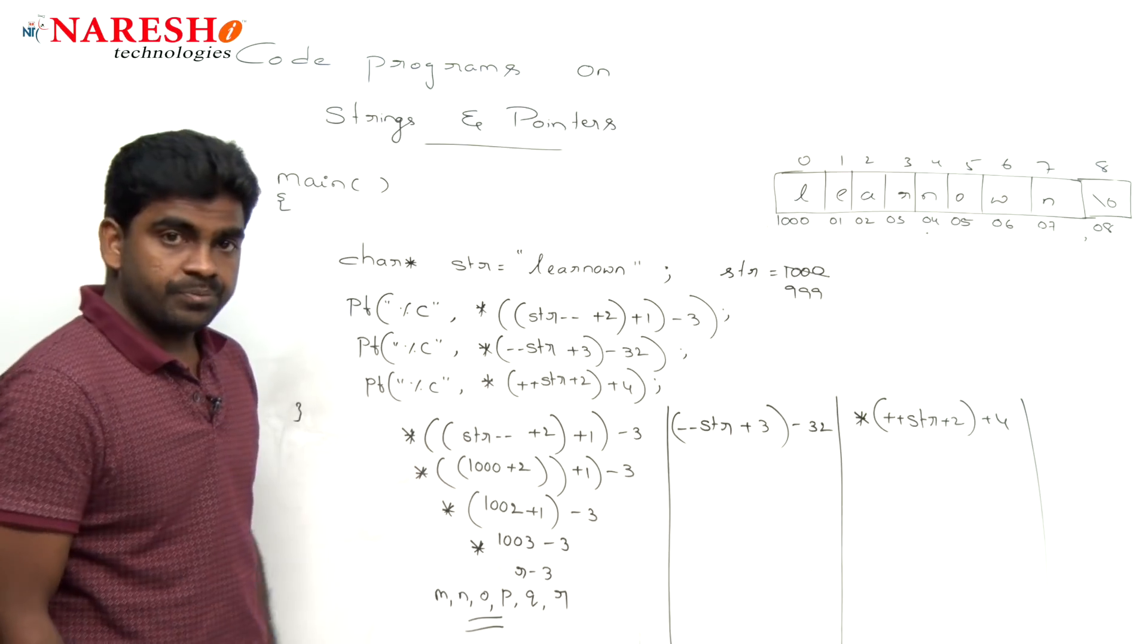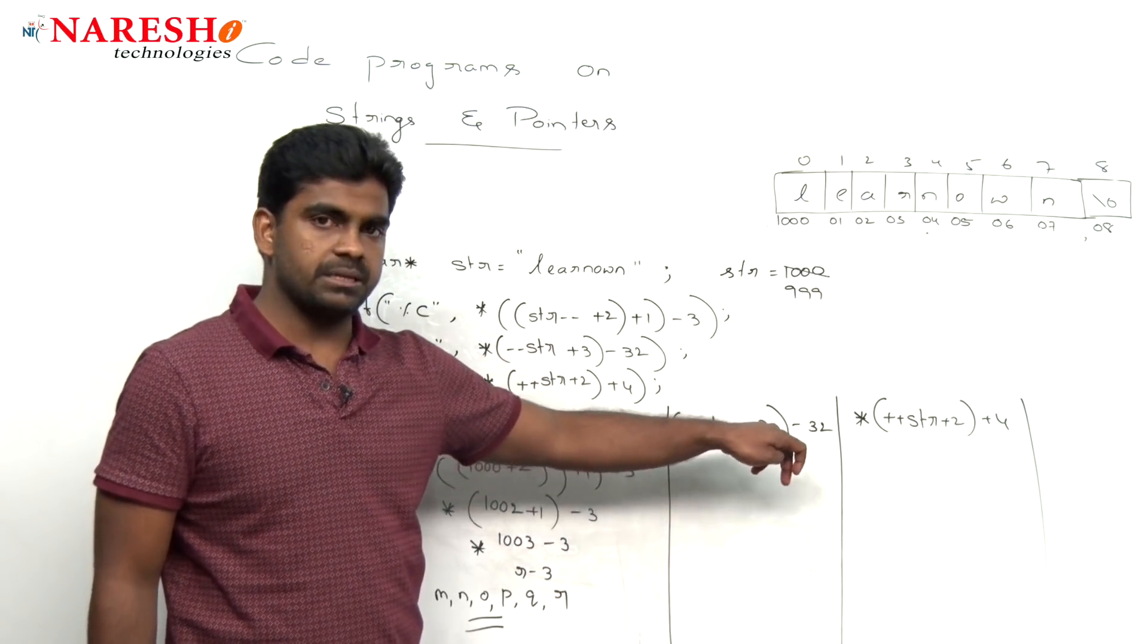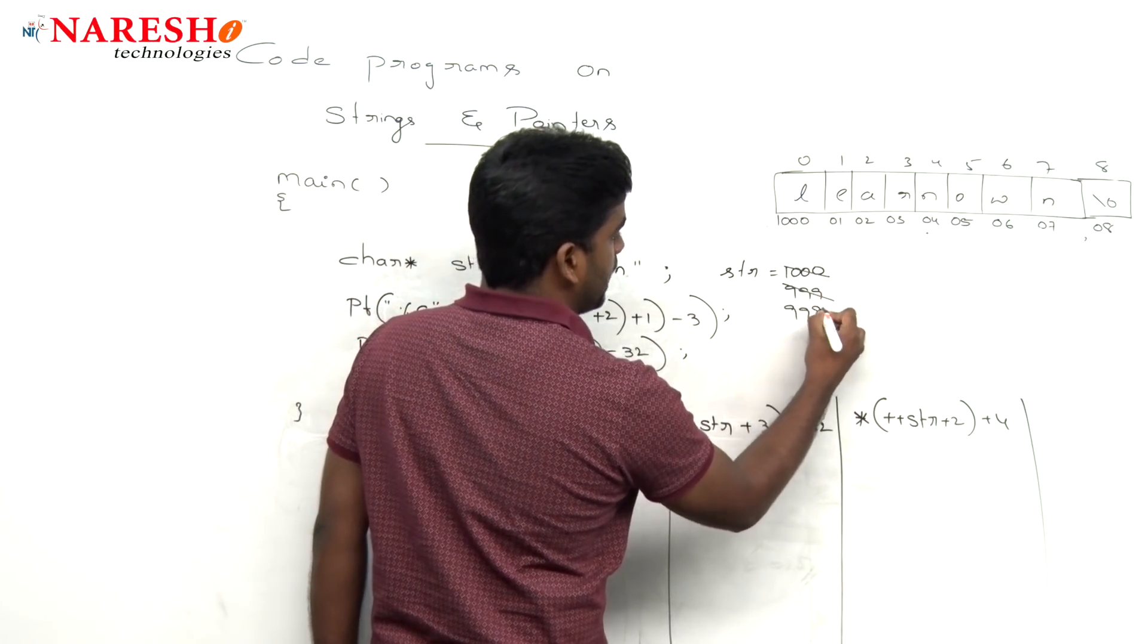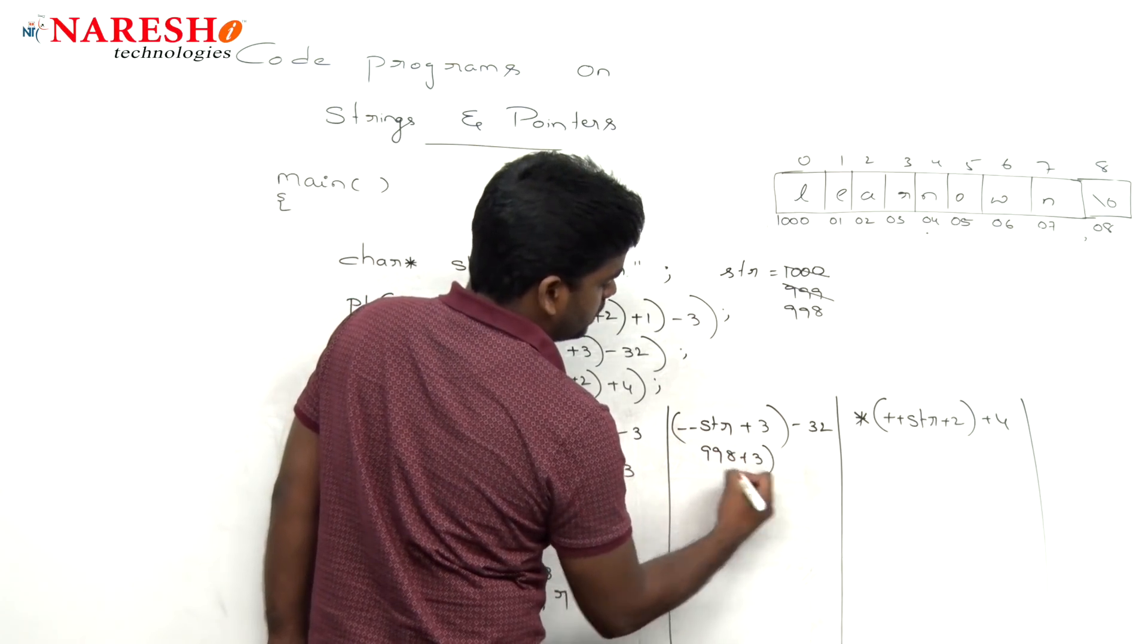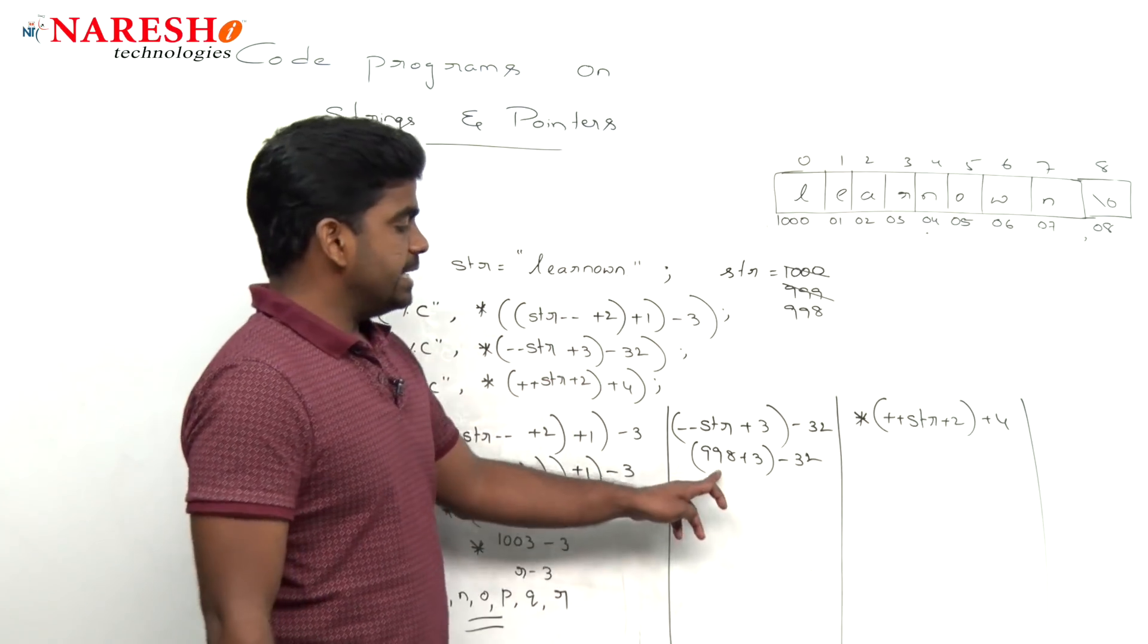Here it is after displaying this O, this is the output. After displaying this, here it is minus minus str plus 3. Minus minus means what? The value becomes 998. Here it is 998 plus 3 minus 32.